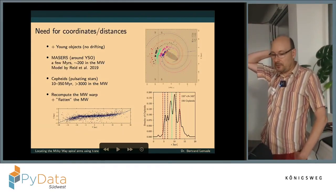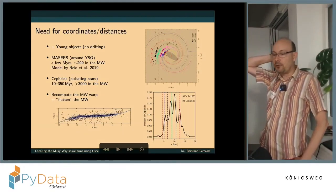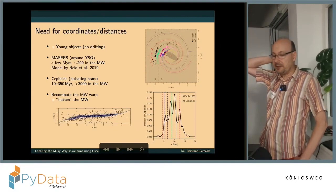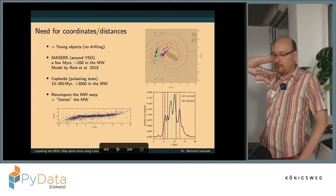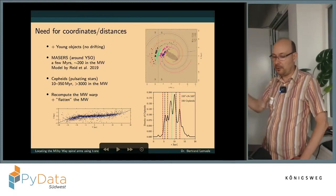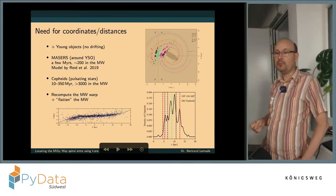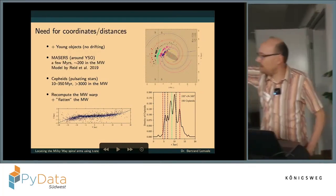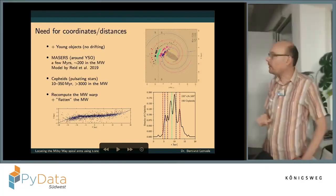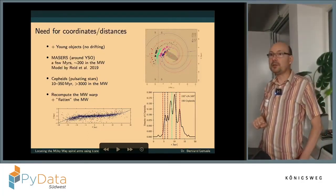And people have done that with masers. So from the acronym you can guess that it's an extension of lasers, except that they emit in the microwave. And you find those around young stellar objects, that's basically stars in forming, so those are a few mega years. And we know something like 200 in the Milky Way, and these people, Reid et al., have made this model of spiral arms based on the detection of these masers.